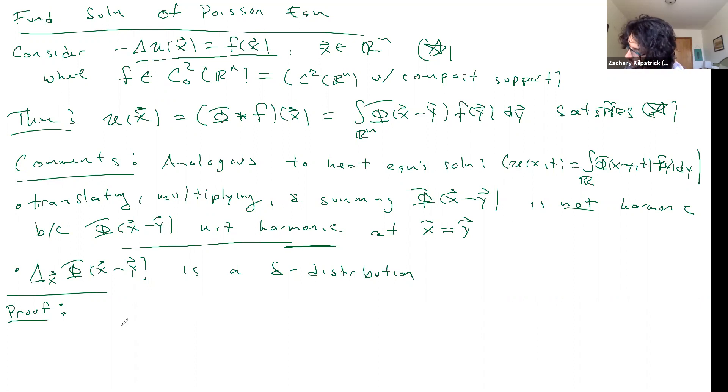So first of all, in the proof, let me start by changing variables. U(x) equals the integral over Rⁿ. I'm just going to swap, as I can do with any convolution, where the x minus y is and where the y is.